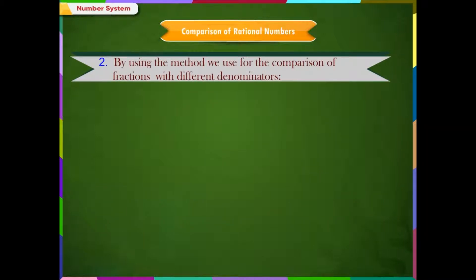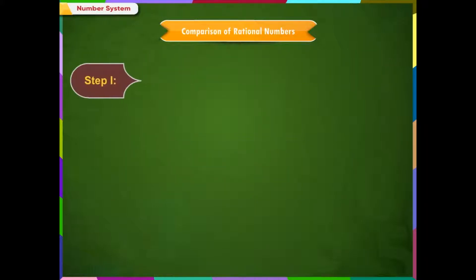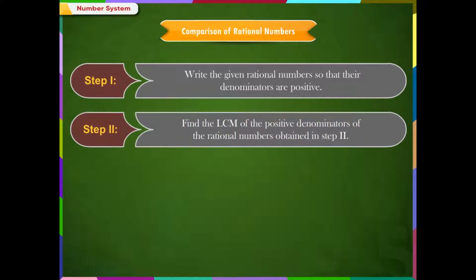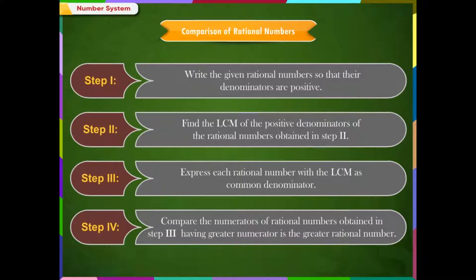By using the method for comparison of fractions with different denominators. To compare two rational numbers with different denominators, use the following steps. Step 1: Write the given rational numbers so their denominators are positive. Step 2: Find the LCM of the positive denominators. Step 3: Express each rational number with the LCM as common denominator. Step 4: Compare the numerators. The number having the greater numerator is the greater rational number.